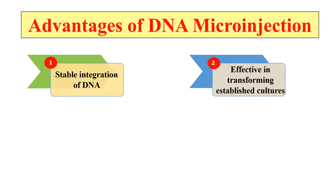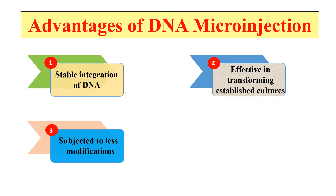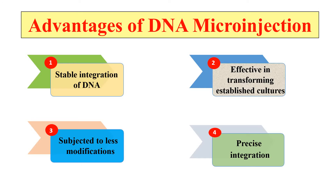Next, it is effective in transforming primary cells as well as established cultures. This method is very effective if we want to transform our primary cell by the introduction of external genes. And the DNA injected in this process is subjected to less extensive modification — there is very less modification in the DNA. And there is a very precise integration, meaning we can inject our DNA exactly at the position where we want, using this microinjection technique.